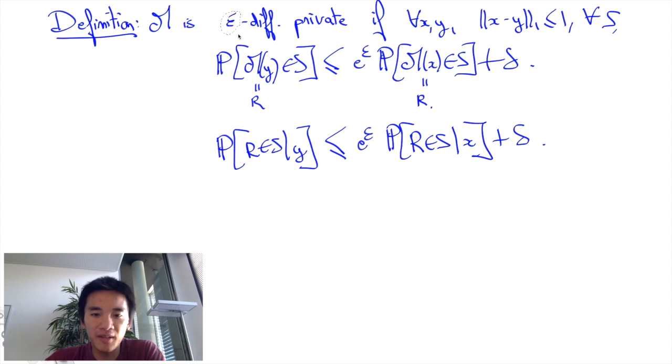That is, we'll restrict ourselves to the case where ||x - y||₁ at most 1 implies that the probability that R is in S given y is at most e^ε times the probability that R is in S given x.